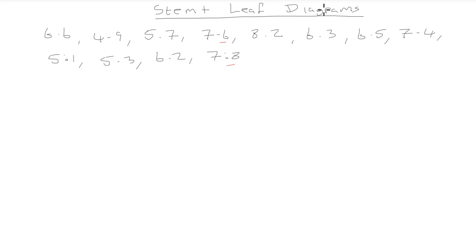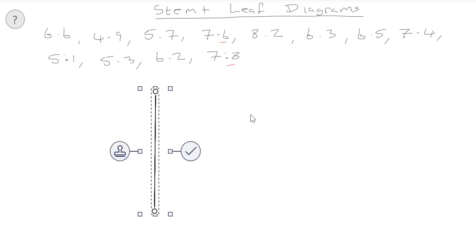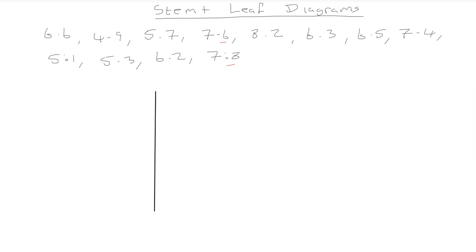We can indicate the decimal nature by using the key. It's important to be aware that there are different versions of stem and leaf diagrams — the key is very important. So we have our division: the left-hand side is the stem and the right-hand side is the leaf. What we represent on the stem part will be the whole numbers within our data set.